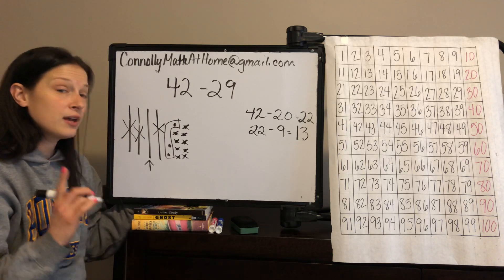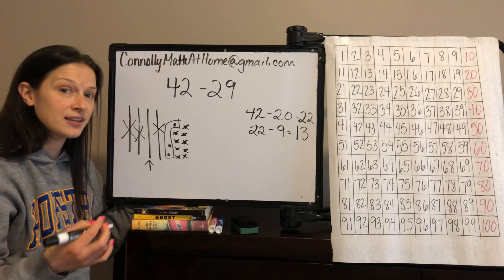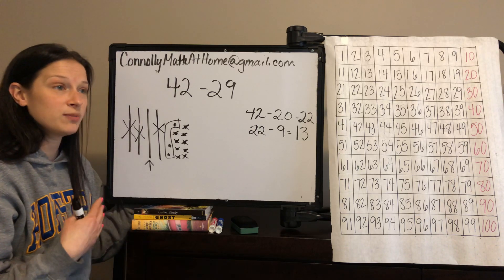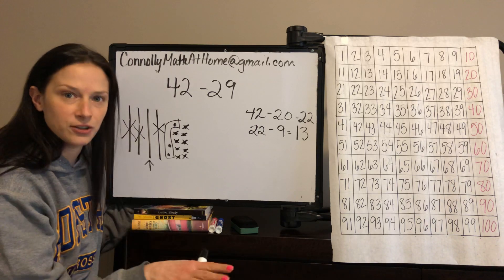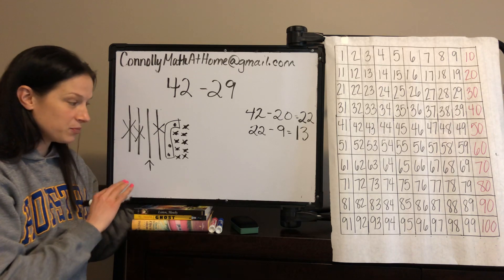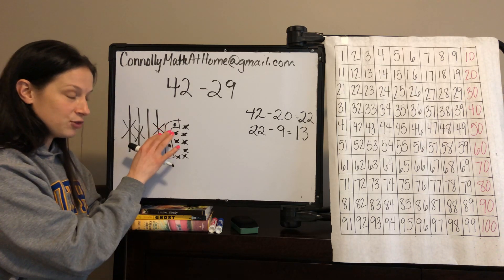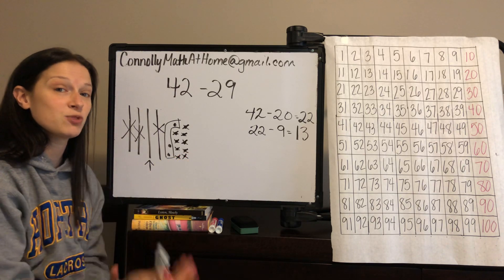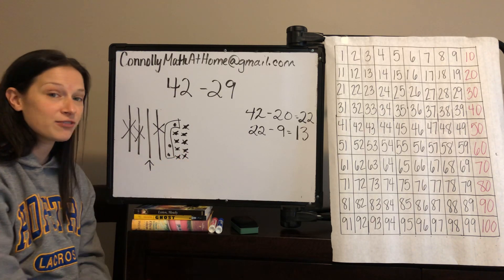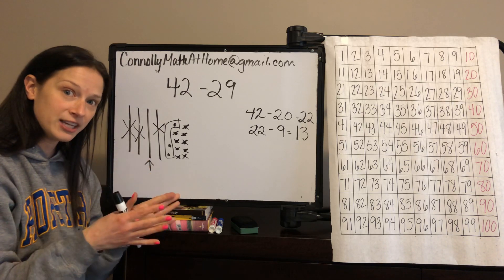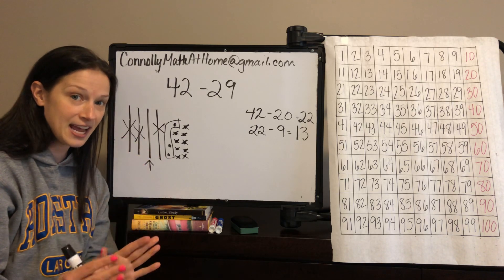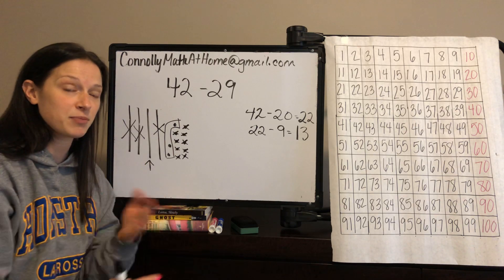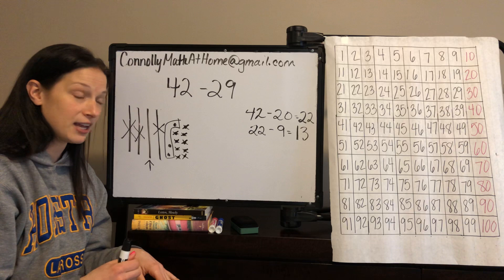What just happened was regrouping — and we do this when we're using the U.S. standard algorithm. It's really important that in later years, students understand that if you have a group of 10 you can change it to 10 ones. When we get to subtracting with three-digit numbers, they'll realize they can take a group of 100 and change it into 10 tens, and take a group of 10 and change it into 10 ones. We're developing that place value understanding from a really young age.